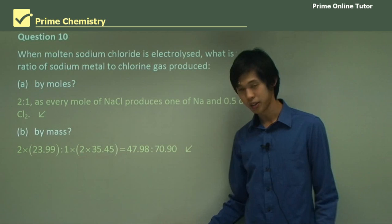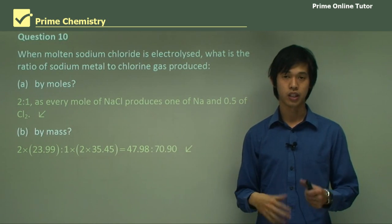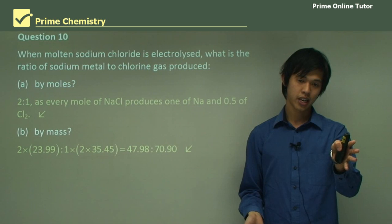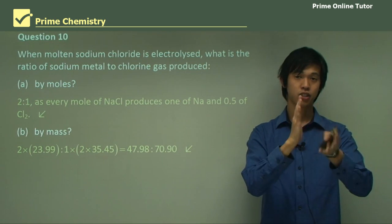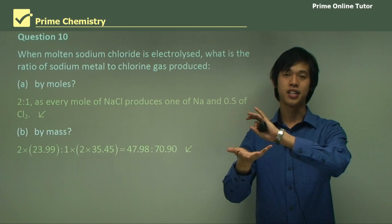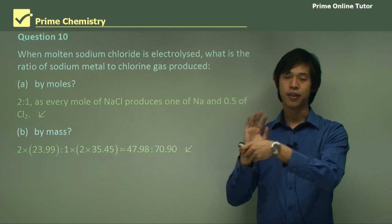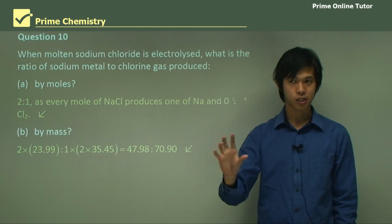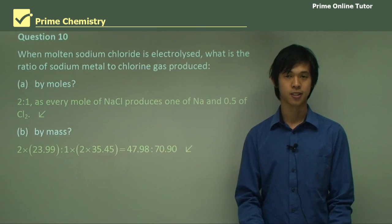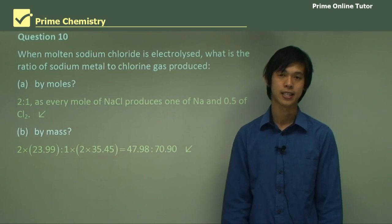So that concludes today's lesson on the electrolysis of sodium chloride. We've looked at sodium chloride electrolyzed as a molten salt, then as a dilute solution, and then as a concentrated solution. And we saw that in the concentrated case, we actually get sodium hydroxide at the end. And so that's where we're heading in our next lesson. I look forward to seeing you in our next lesson.